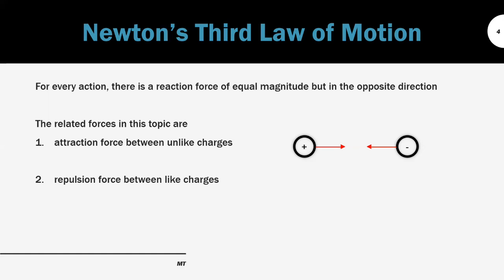The next case is like charges — for example, two positive charges. The positive charge on the left will be repelled by the positive charge on the right, and similarly the positive charge on the right also experiences a repulsion force of equal magnitude but in the opposite direction. This is how Newton's Third Law of Motion relates to the electrostatic forces we are studying in this topic.